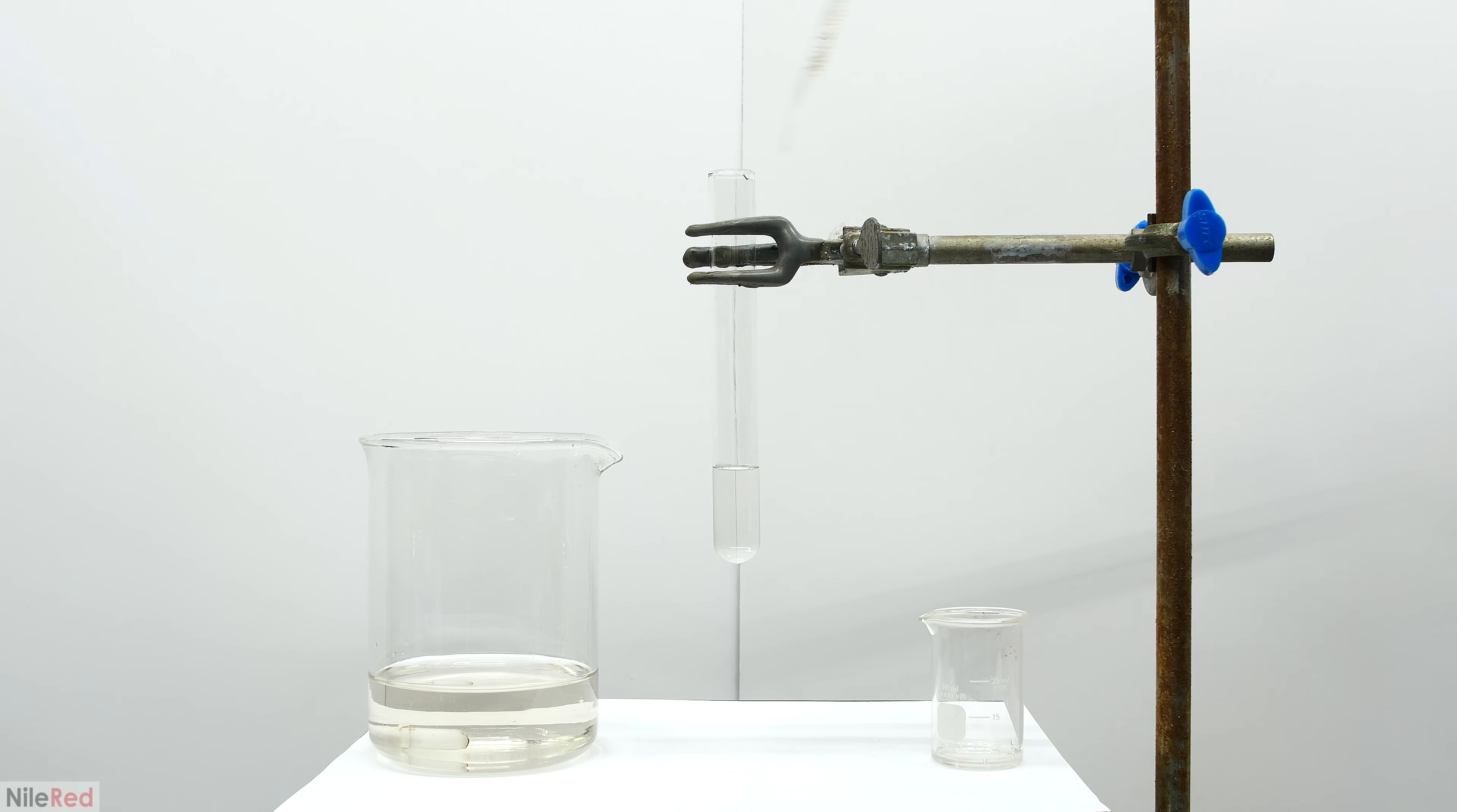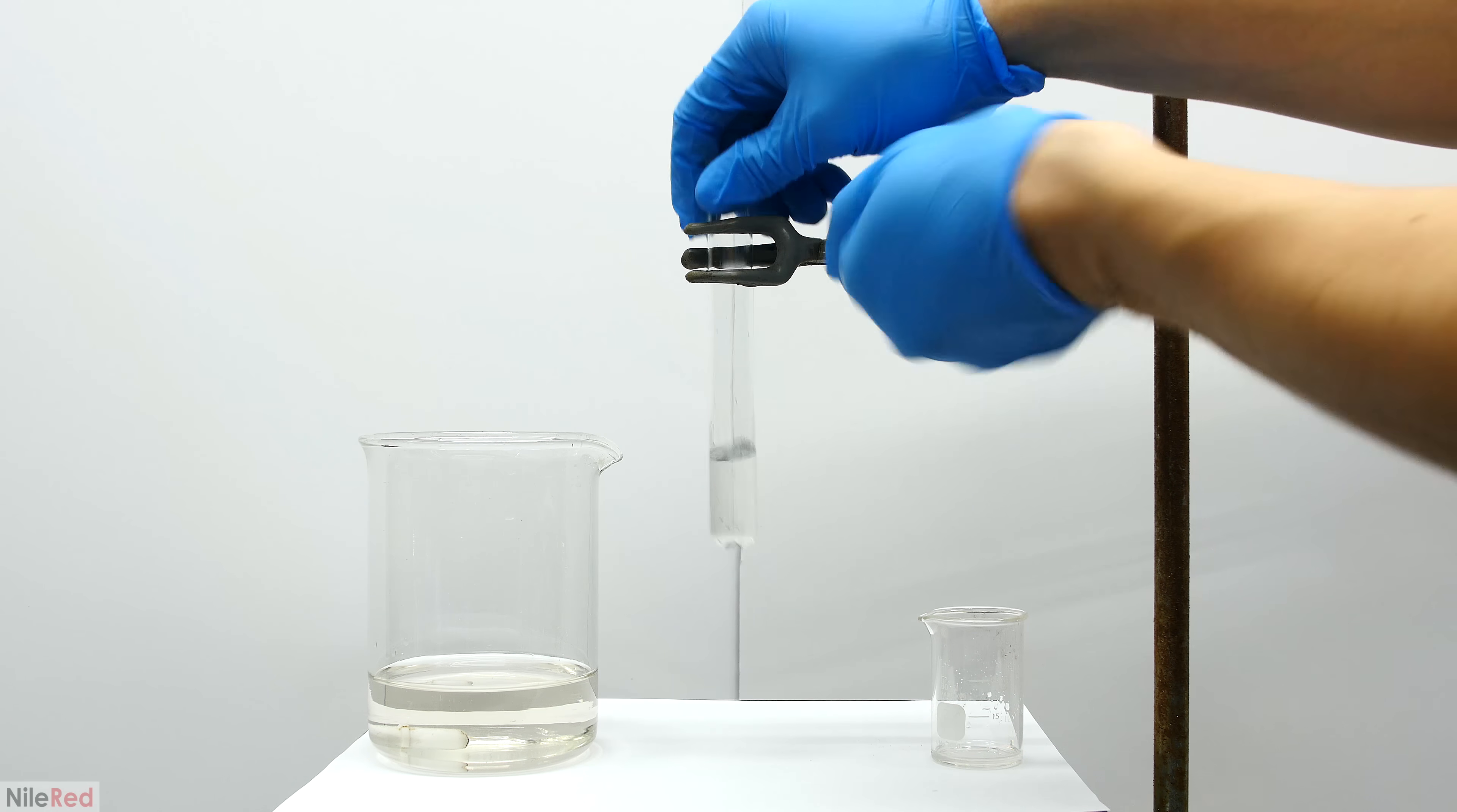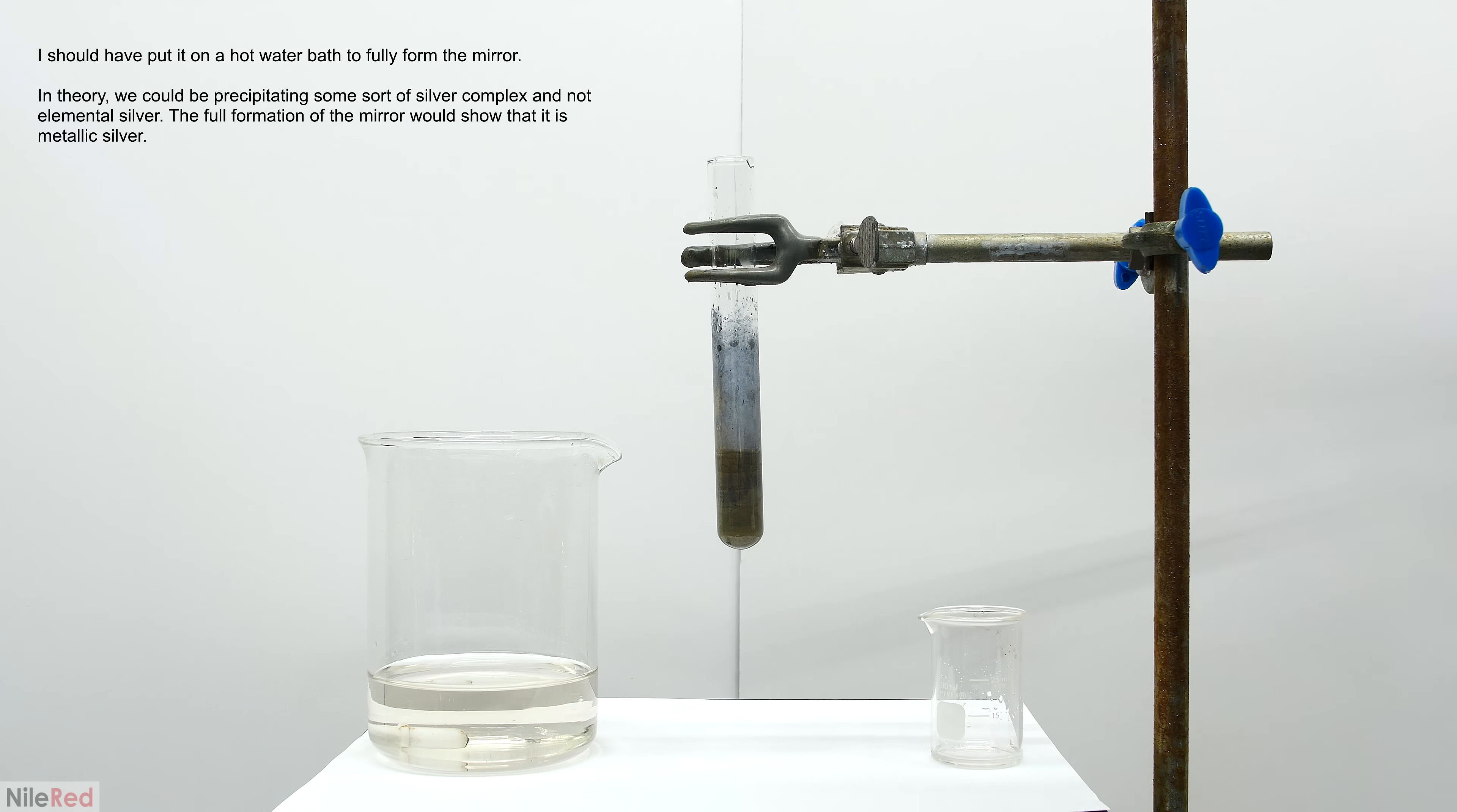With the Tollens reagent in the test tube, I go ahead and add a few drops of the first unknown. Before I even take it off the stand, we can already see some silver forming. When I shake the test tube, a lot of silver starts to fall out of solution, and we can see a mirror forming on the sides. This is a very strong positive, and it's highly suggestive that we have an aldehyde present.